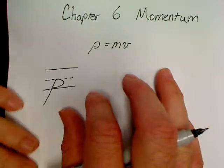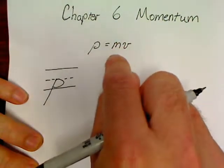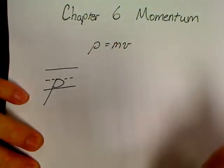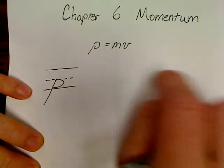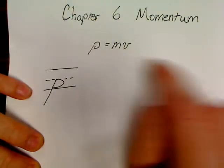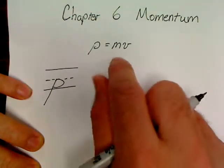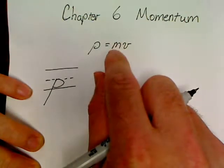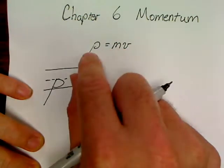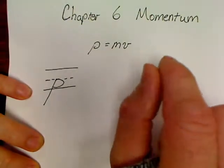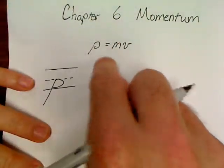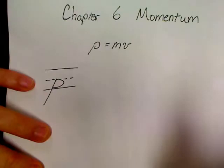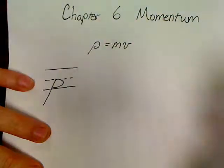So momentum is nothing but the product of an object's mass and velocity times each other. It's kind of like going back to football - sometimes not necessarily big guys are all that scary because they run so slow. You might have a little guy who runs really fast, and he has more momentum than the big guy does.